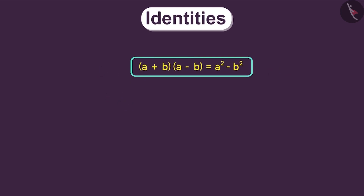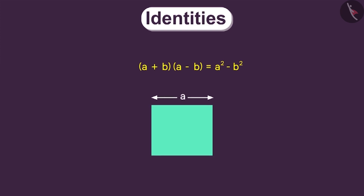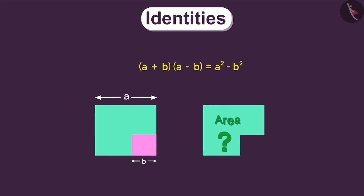There is also an interesting way to prove this identity. Let's say we have a square and the length of its side is a, and we will remove a small square with side b from it. Can you tell me what will be the area of this remaining portion?